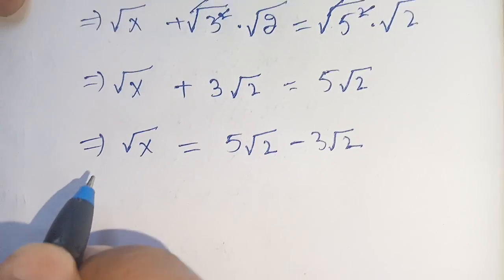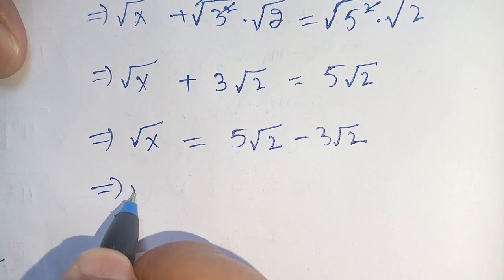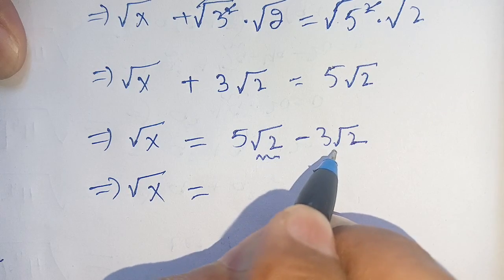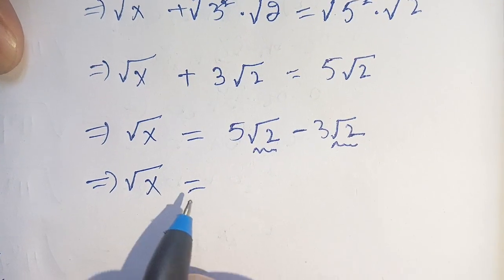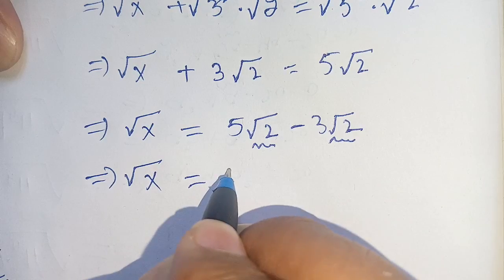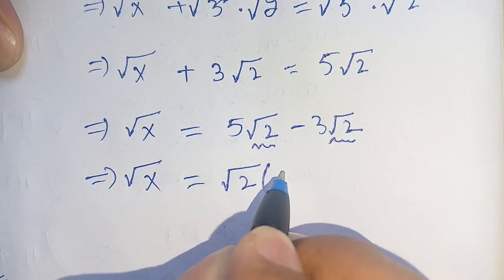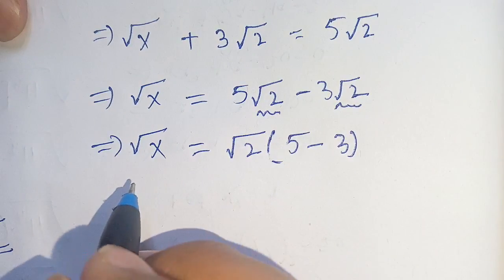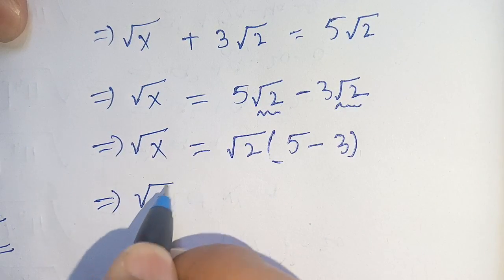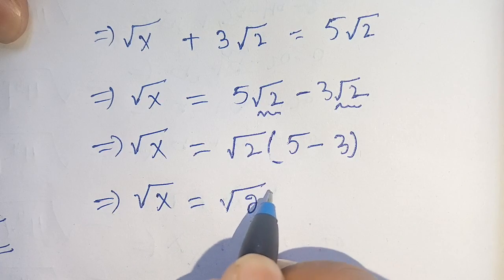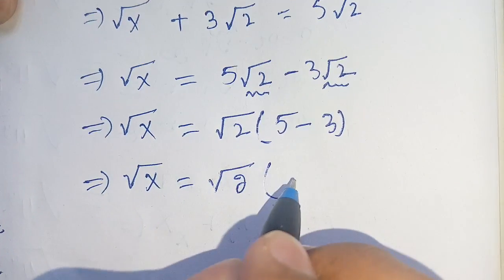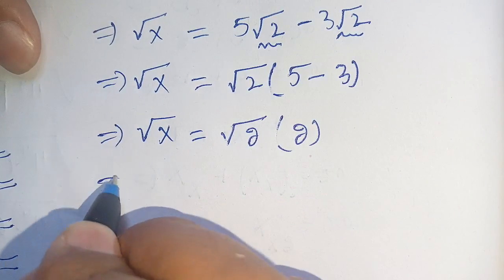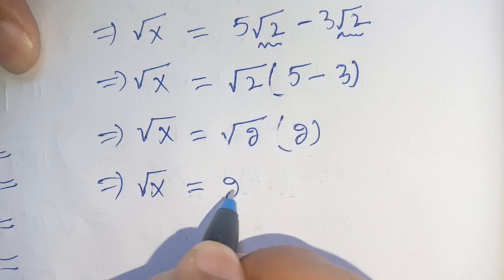We factor out square root of 2 from both terms and get square root of x equals square root of 2 times (5 minus 3), which is square root of 2 times 2. So square root of x equals 2 times square root of 2.